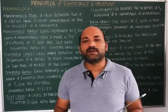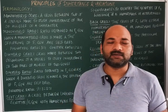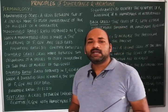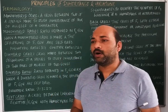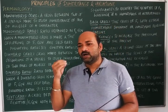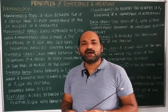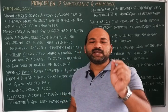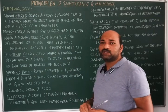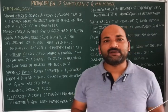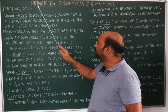In a monohybrid cross, we generally take a single character — it may be the height of the plant, the color of the pod, shape of the seed, color of the flower, position of the flower, or the fruit. Any one character is considered, regulated by a pair of alleles.